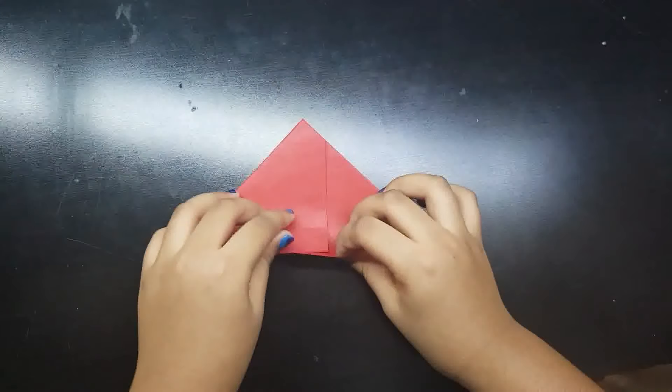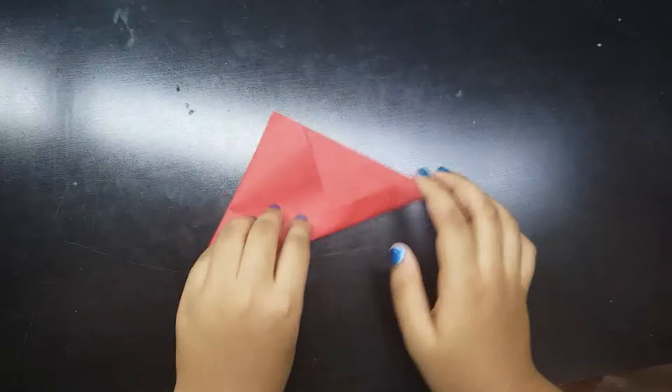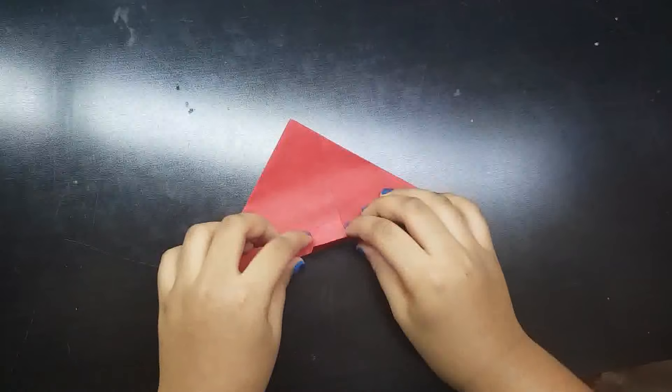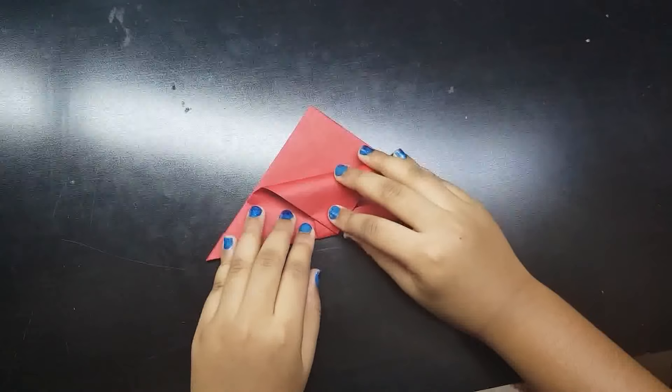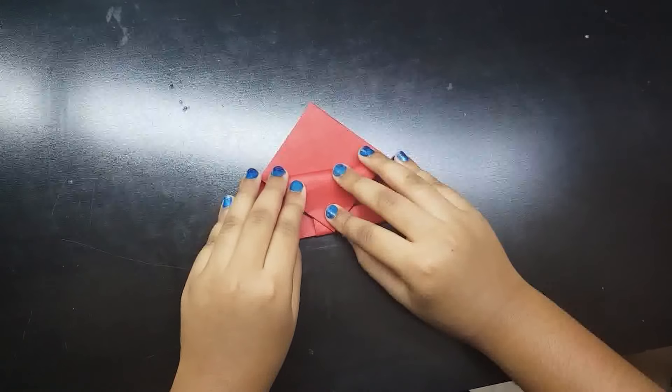Now tuck the intersection point like this. Then fold the tip towards the other end and tuck it inside.